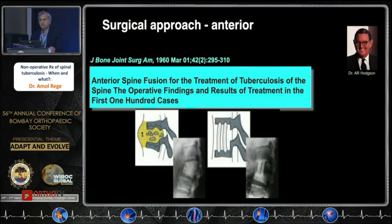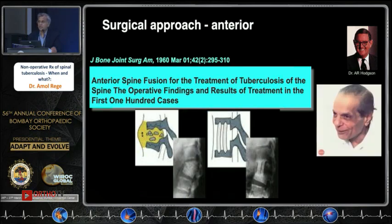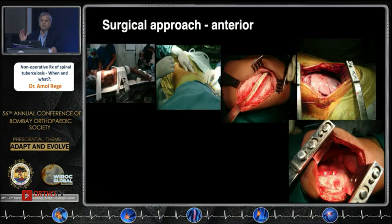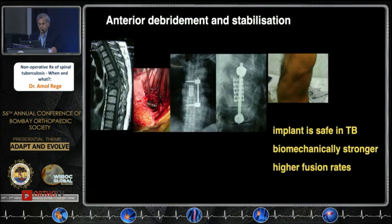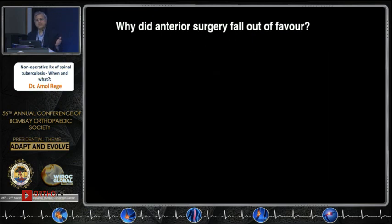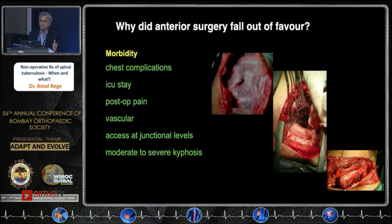The classical approach was described by Hodson's article 60 years back, popularized in India by Dr. Bhavudekar — possibly before Hodson's publication. In this lateral approach, you do a thoracotomy, reflect the lung, go to the diseased area, aspirate the abscess, send it for culture and histopathology, debride the tissue, and stabilize it. Implants are safe in tuberculosis — it has been proved. Biomechanically it is strong and yields higher fusion rates by the anterior approach. But then why did anterior surgery fall out of favor? Because of morbidity and complications: chest complications, ICU stay, post-operative pain, vascular complications, and difficulty accessing junctional levels.